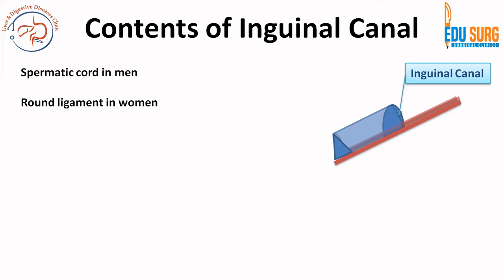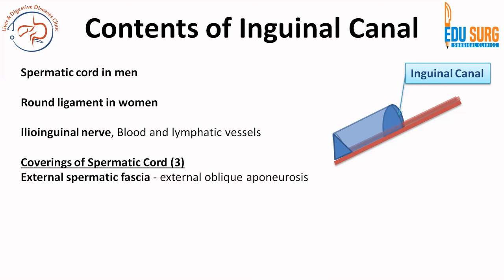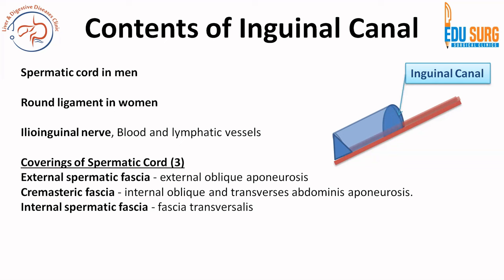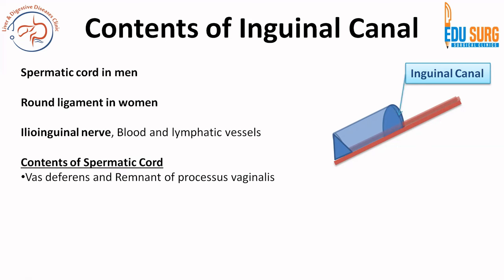Important contents of the inguinal canal include the spermatic cord in men and the round ligament in women, as well as the ilioinguinal nerve, blood vessels, and lymphatic vessels in both. A commonly asked question concerns the contents and coverings of the spermatic cord. There are three coverings: external spermatic fascia, cremasteric fascia, and internal spermatic fascia. From anterior to posterior, the external oblique aponeurosis forms the external spermatic fascia, fascia transversalis forms the internal spermatic fascia, and the internal oblique and transversus abdominis aponeurosis forms the cremasteric fascia. Contents include the vas deferens, remnant of processus vaginalis, and lymphatics.